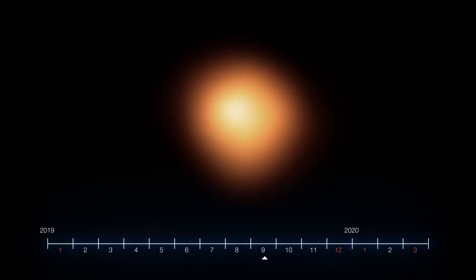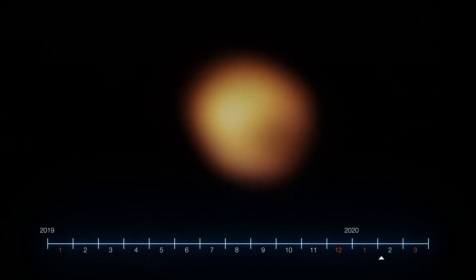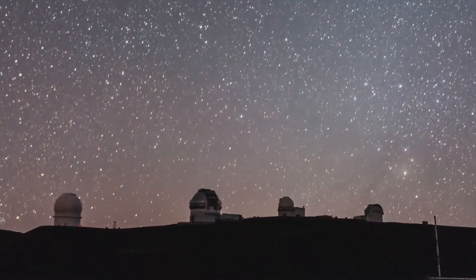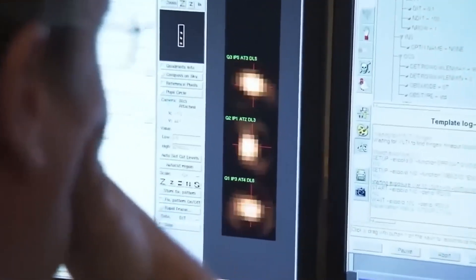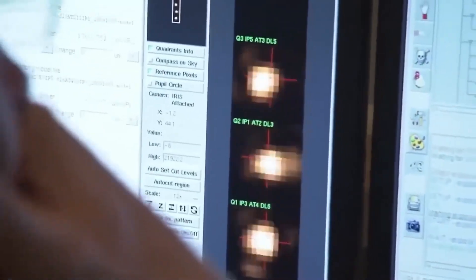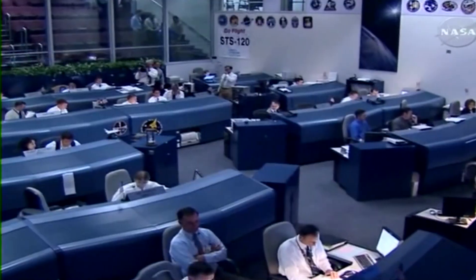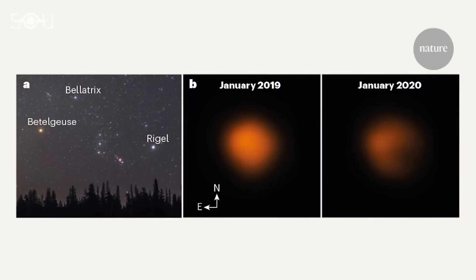The irregular fading of Betelgeuse in 2019 and 2020, followed by a brief return to its usual brilliance, drew a lot of attention. Astronomers believe it may indicate that the star is about to die. Betelgeuse has been the topic of significant inquiry since the 1st century BCE, but why did it fade quickly and in the opposite direction of its regular cycle?